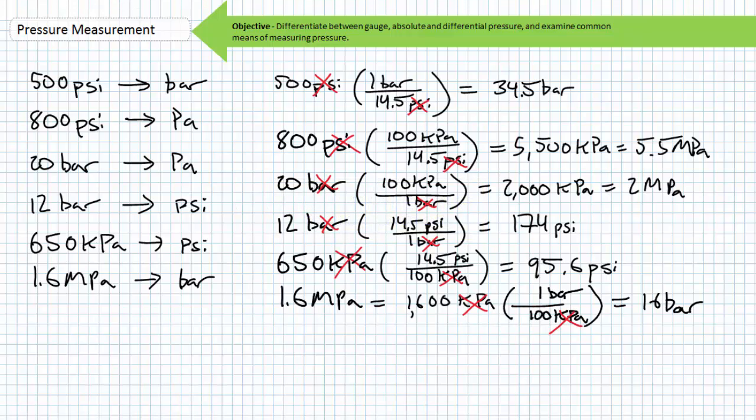If you did the unit conversions correctly, you should have obtained the following results. 500 PSI is roughly equivalent to 34.5 bar. 800 PSI is roughly equivalent to 5.5 megapascals. 20 bar is equivalent to 2 megapascals. 12 bar is roughly equivalent to 174 PSI. 650 kilopascals is roughly equivalent to 95.6 PSI. And 1.6 megapascals is equivalent to 16 bar.